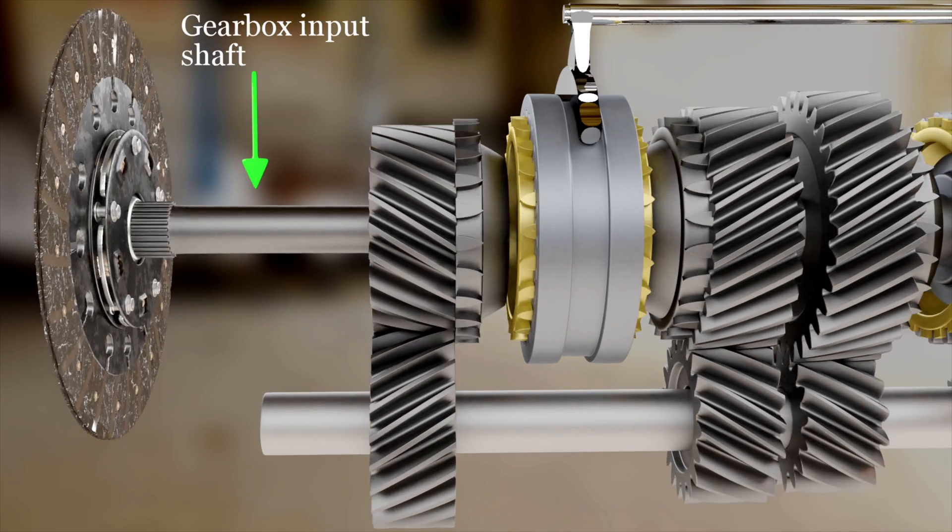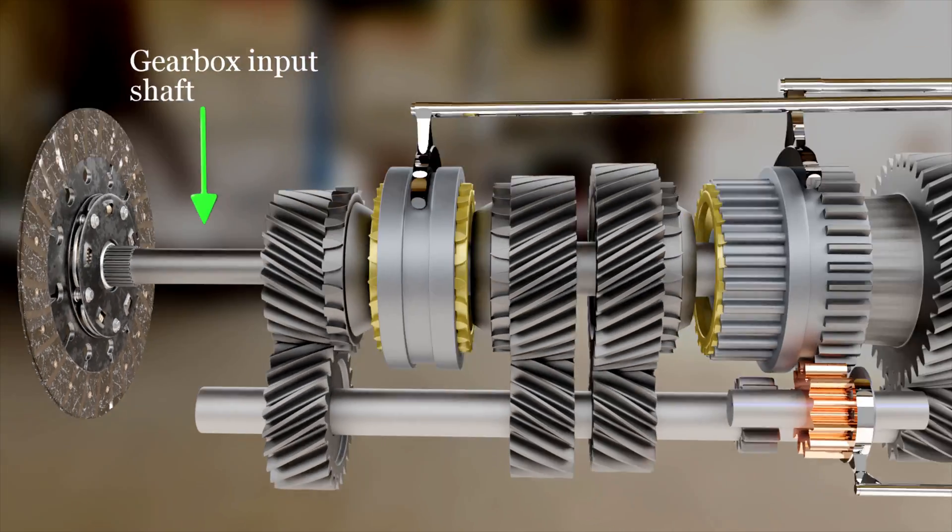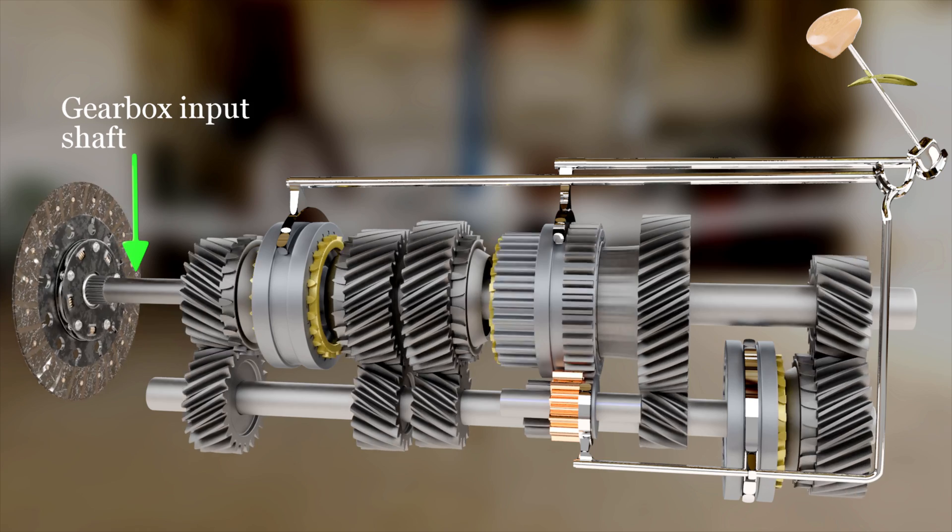The spline shaft is the input shaft of the gearbox and thus transmits power to the gearbox unless the clutch is disengaged.